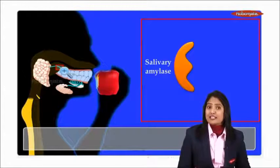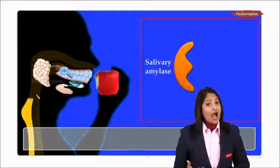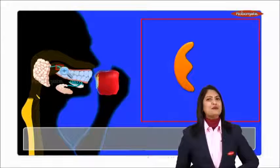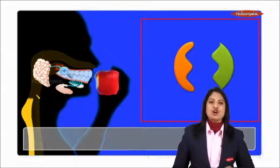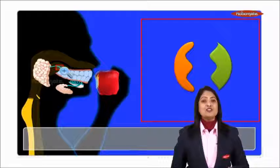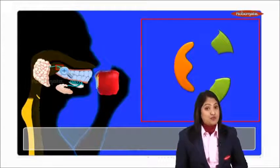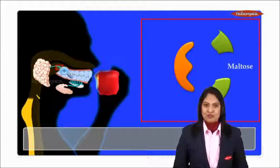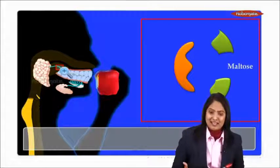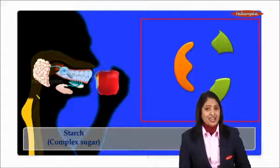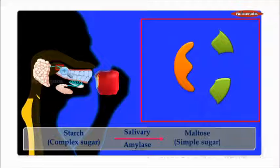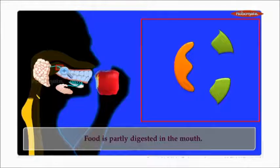Focus on the name — salivary amylase. Any enzyme that has '-ase' as a suffix is going to break down something in our body. Salivary amylase is going to break down 'amyl' — amyl means starch, amyl means carbohydrates. So salivary amylase acts on starch, one of the major components of food, and breaks it down into a comparatively simpler substance called maltose — a simpler sugar. So starch, a complex sugar, is broken down into the simpler sugar maltose in the mouth.